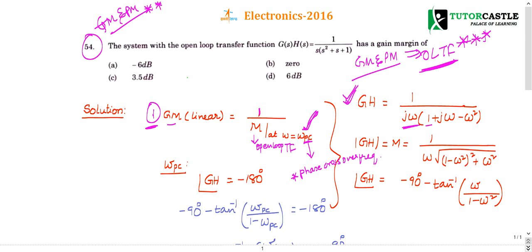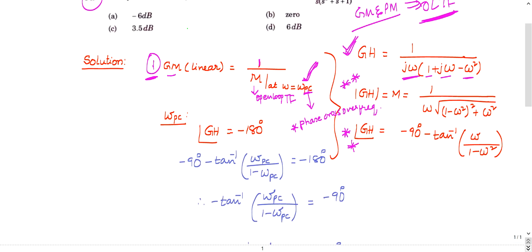Since (jω)² = −ω², the magnitude M = 1 / [ω · √((1 − ω²)² + ω²)], and the phase = −90° − tan⁻¹(ω / (1 − ω²)). Everybody should know how to find the magnitude and phase of a given transfer function — this is basic. If not, refer to the basic videos.